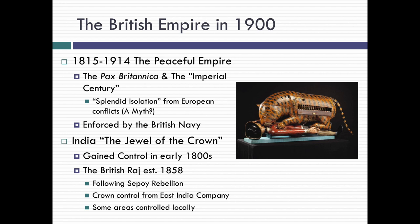The British navy was one of the most powerful navies in the world, and it kept the peace and kept conflict down. India is sometimes called the jewel in the crown, and this is one of the reasons why Disraeli wanted to name Victoria Empress. Great Britain had gained control in the early 1800s, and the British Raj was established by mid-century. There were some rebellions, the most famous of which was the Sepoy Rebellion. The British Crown had gained control through the agency of the East India Company, and while some areas were controlled locally, Great Britain largely had control of India — the highlight of its empire.